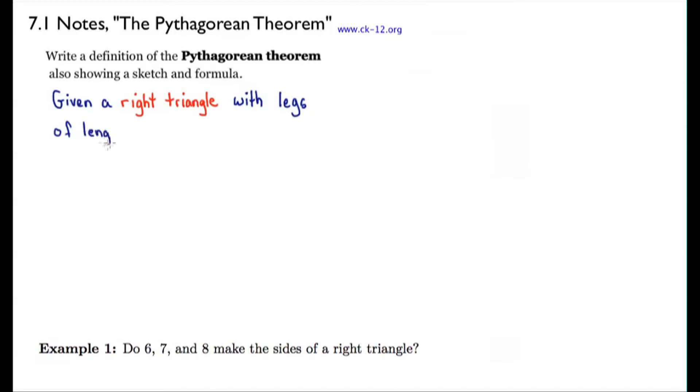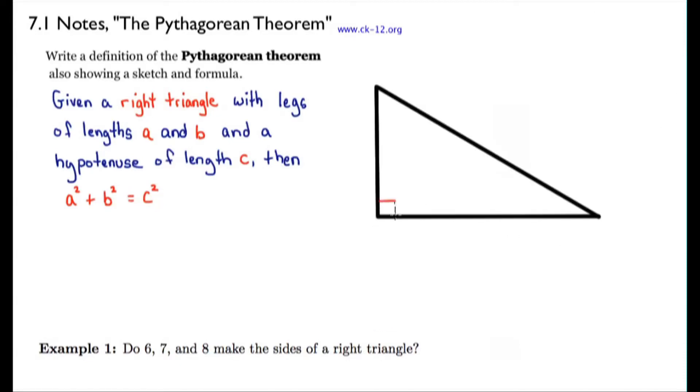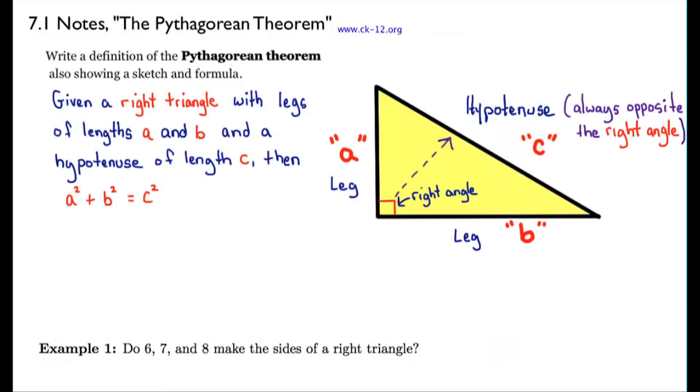Given a right triangle with legs of lengths a and b and a hypotenuse of length c, then a squared plus b squared equals c squared. So we have a right triangle. The two sides next to the right angle are the legs, and the side across from the right angle is called the hypotenuse, and it's always opposite the right angle.